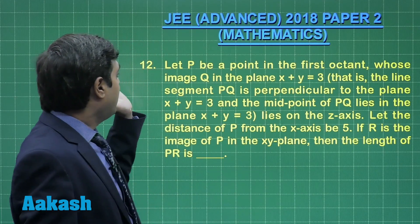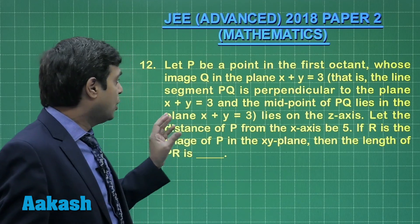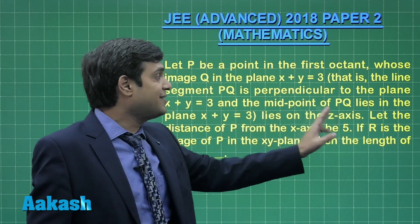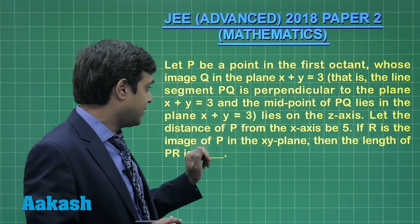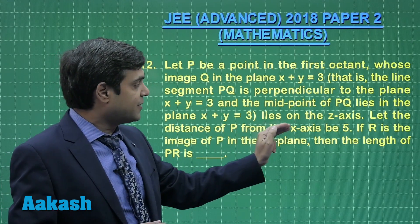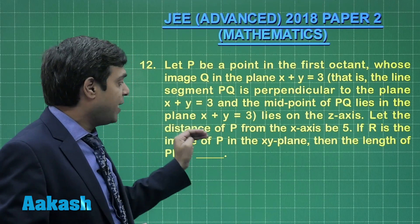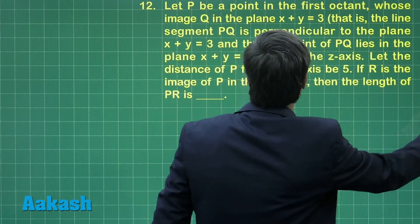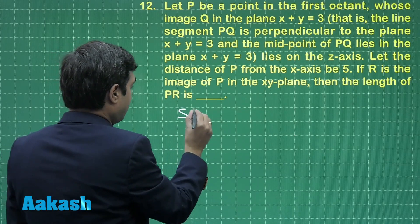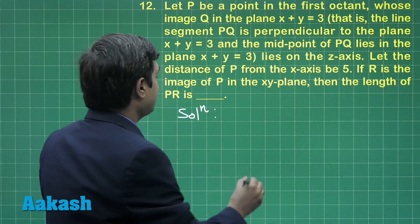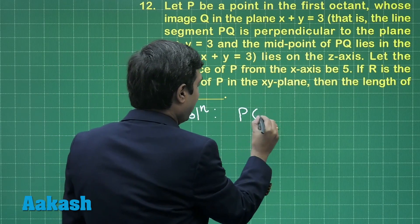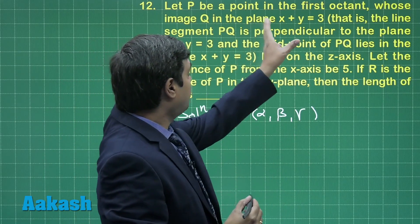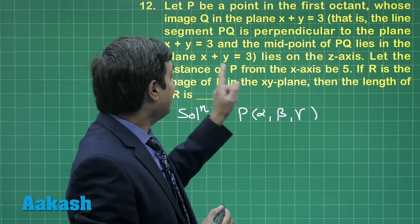Taking question number 12. Let P be a point in the first octant whose image Q in the plane x plus y equals 3 lies on the z-axis. The image of point P is lying on the z-axis. Let the distance of P from the x-axis be 5. If R is the image of P in the xy-plane, then find the length of PR. Let us start this question. It is given there is a point P; let us consider the point P as (α, β, γ). Its image with respect to the plane x plus y equals 3 is lying on the z-axis.